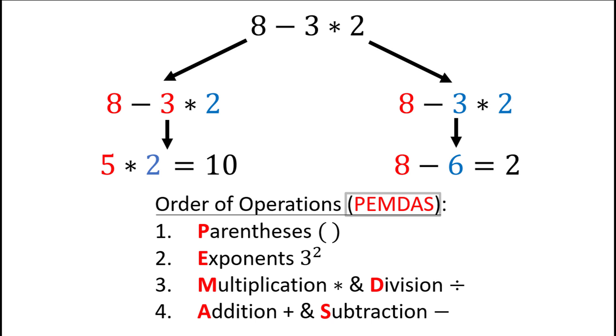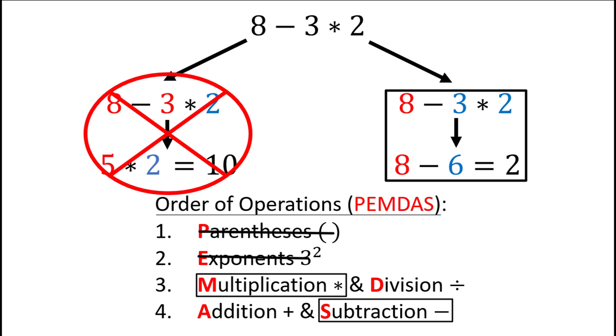So with PEMDAS introduced, you should be able to look back at this problem and know which one is correct. We didn't have any parentheses or exponents, so the P and E of PEMDAS could be ignored. But we do have multiplication, which comes before subtraction in the order of operations. Meaning that the second method, where we multiplied 3 times 2 first and then subtracted the answer from 8, is the correct answer. And the other method is incorrect.